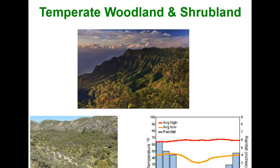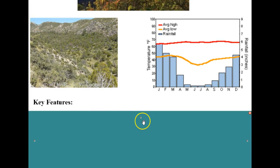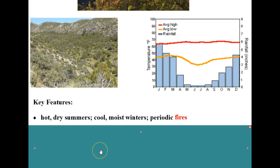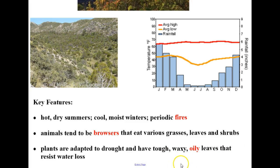Next is temperate woodland and shrubland. Key features include hot dry summers, cool moist winters, and periodic fires — so we're talking about places like California out west. The animals in this biome tend to be browsers, eating various grasses, leaves, and shrubs. The plants are adapted to drought and have tough, waxy, oily leaves that resist water loss — which also contributes to the periodic fires.